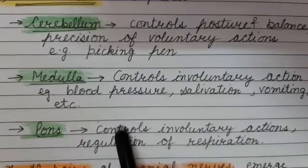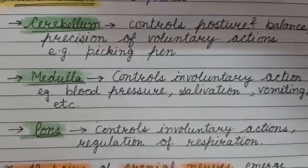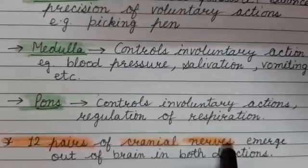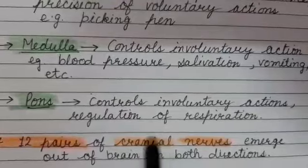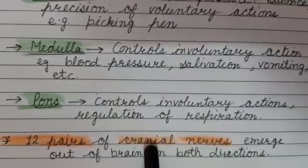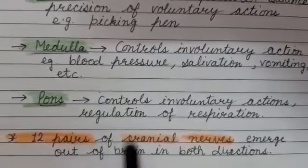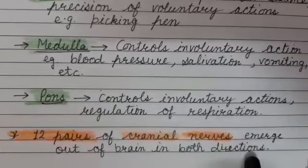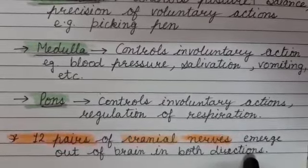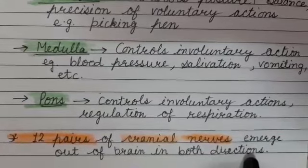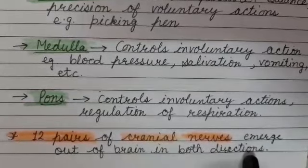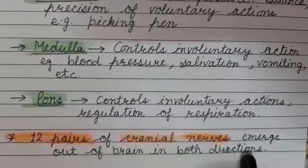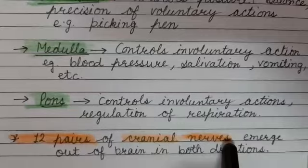Another important thing to learn: there are 12 pairs of cranial nerves. Cranial nerves are the nerves that arise from the brain. These 12 pairs of cranial nerves emerge out of the brain in both directions and connect various upper body parts like eyes, nose, and ears.